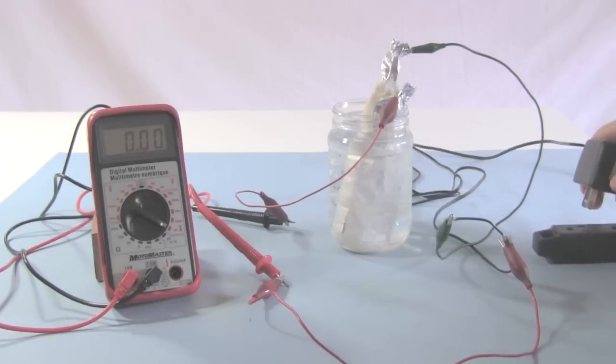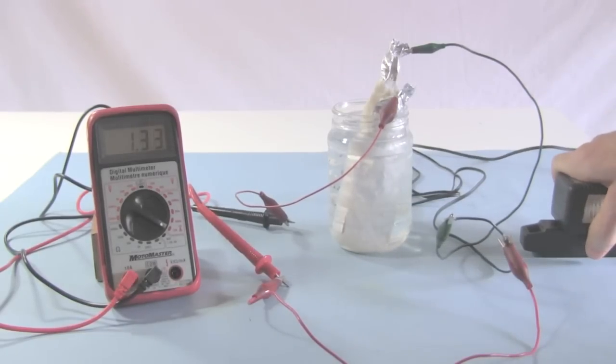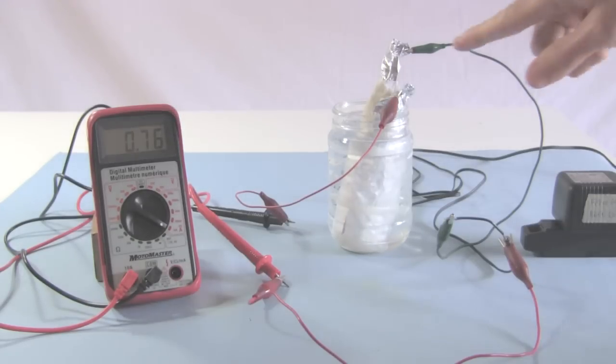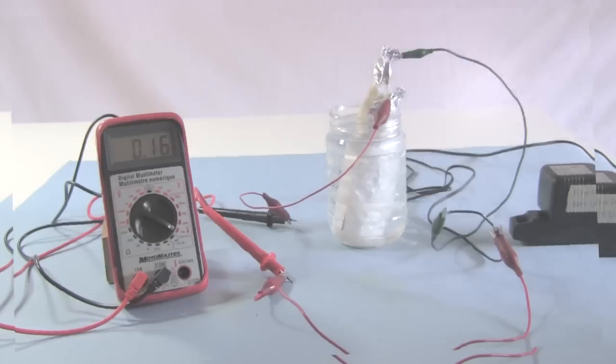Alright, plug it in. And we're at 1.3 amps. So, it's a good thing I started on the 10 amp scale. That was too big for my 200 milliamp scale. So, 900 milliamps and dropping. So, it's now forming. The outer plate will be the positive for my electrolytic capacitor. And the inner plate will be the negative.